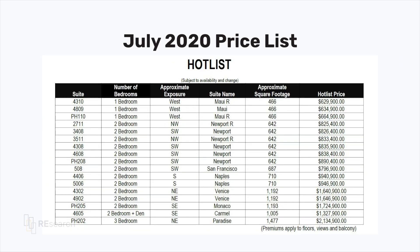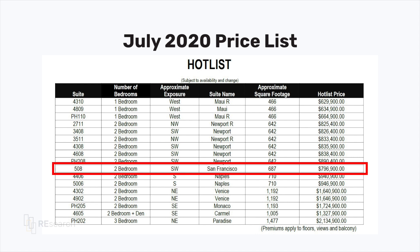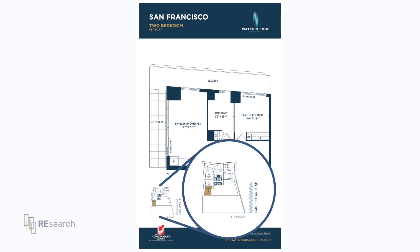Two years later, in July 2020, I asked the developer's sales team for an updated price list. I want to draw your attention to this unit — the San Francisco — which as of July 2020 had not sold. Now, this floor plan is only available in the podium section of the building on the fifth floor, so there's no floor or view premium to consider. What this shows is that within two years the market value of this unit increased by two hundred and five thousand dollars.